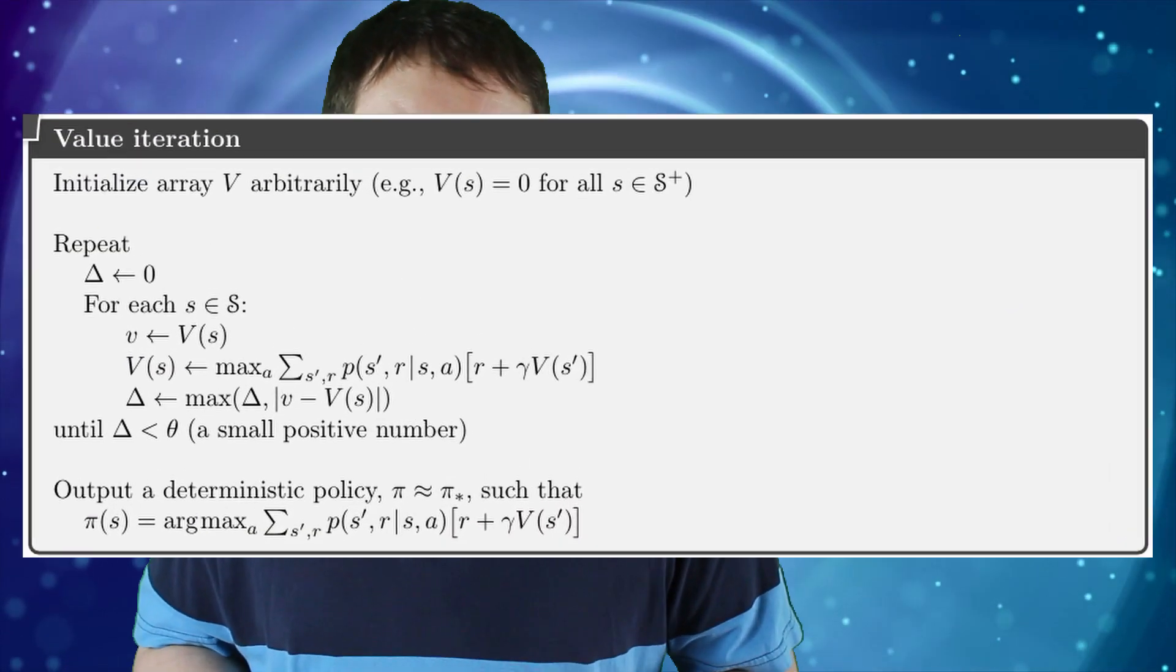In fact we can and the special case of stopping after a single step of policy evaluation is called value iteration. Just to be clear by single sweep I mean a single iteration of all the states in the state space. The algorithm to do this looks like the following.